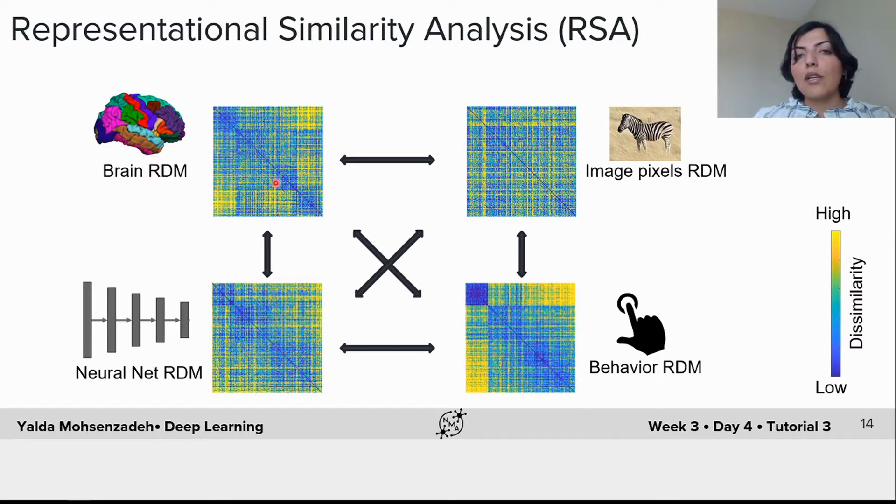For example, you can compute RDM from brain data, from neural network activity patterns, from image pixels themselves, or even from behavioral data. For example, in the orientation discrimination test, you can create an RDM by comparing reaction times to each stimulus, and then compare it with brain data or neural network data.